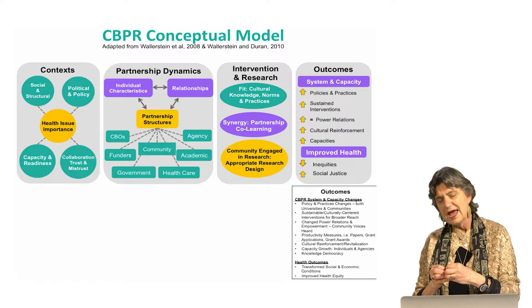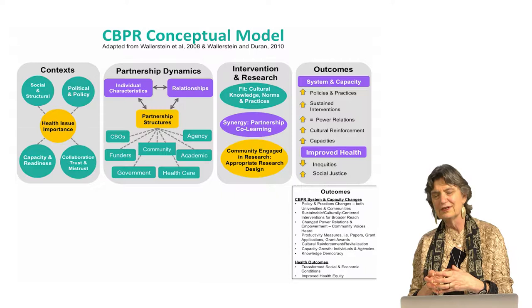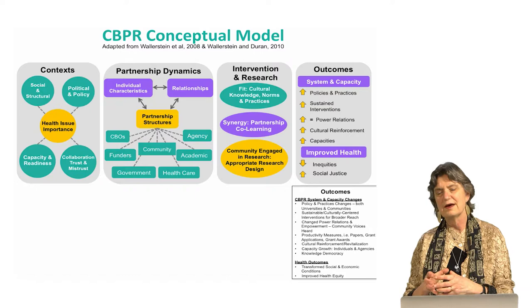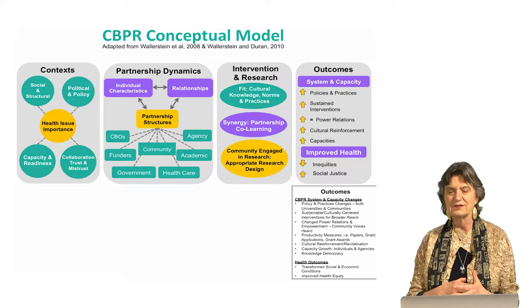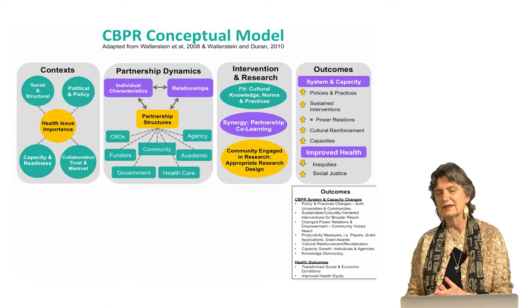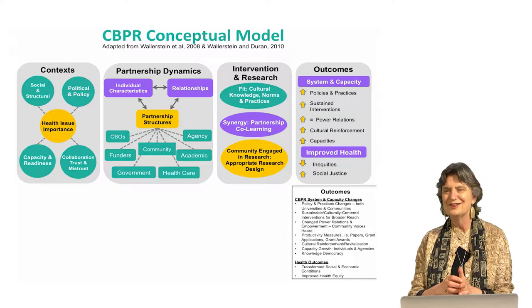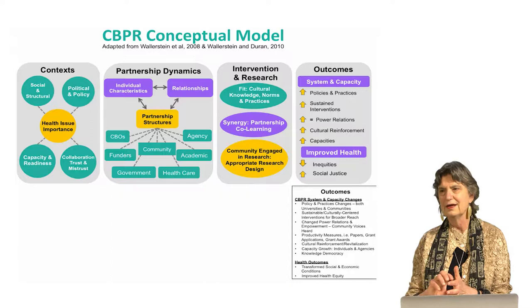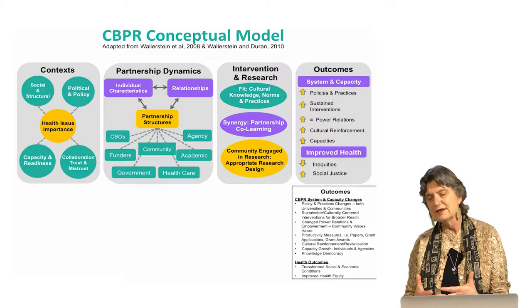In addition to the specifics of the project, you have the possibility of thinking through what are the intermediate system and capacity outcomes that a community needs to go through before you can say we have improved health conditions. That might be changed practices and policies at the community level around access to food, addressing food desert issues, or access to contraceptives for adolescents. You also have to look at the university — is this partnership influencing the university's ability to engage in community research in a more thoughtful, authentic, and responsive way? Sustainability is another outcome.